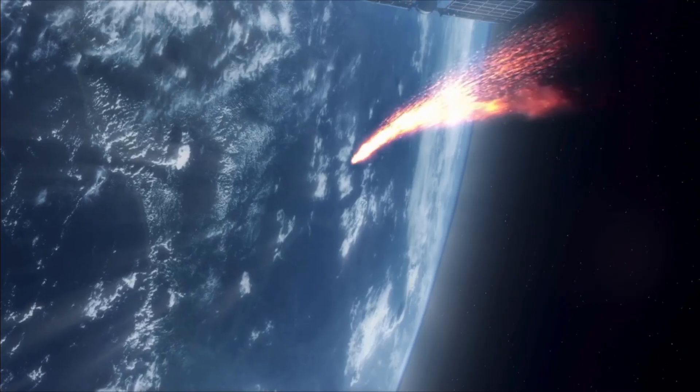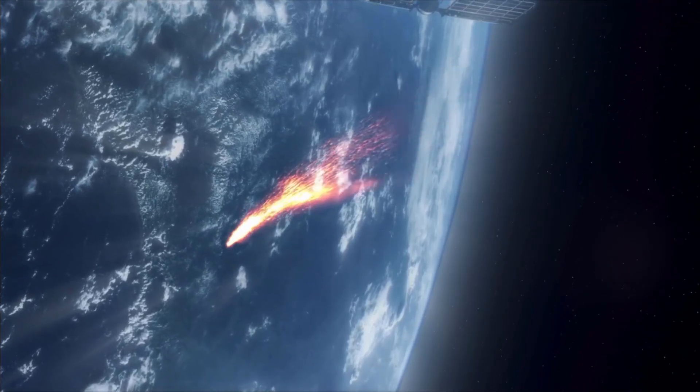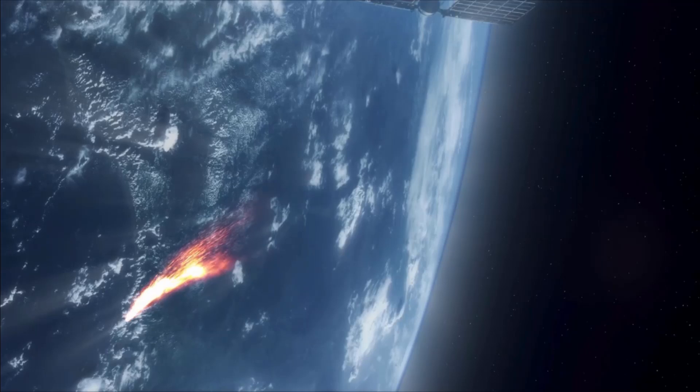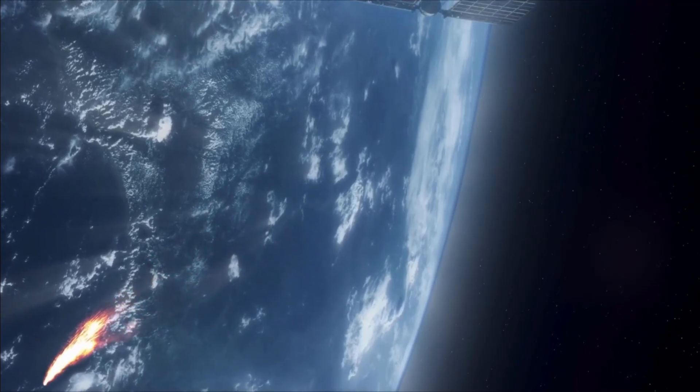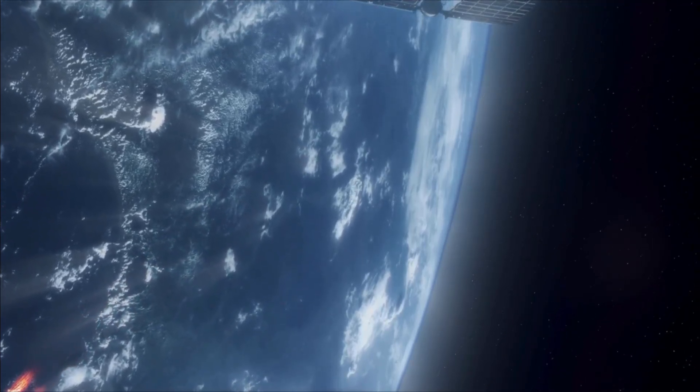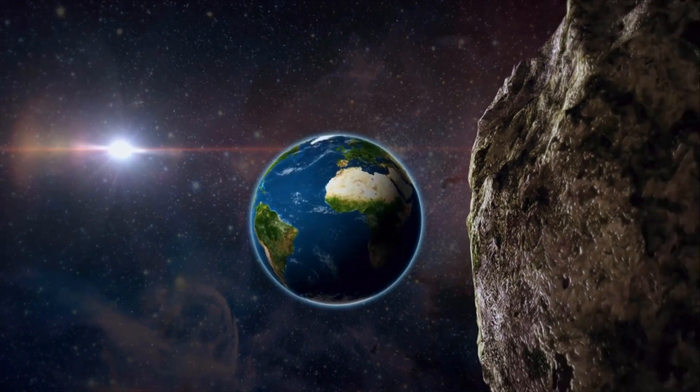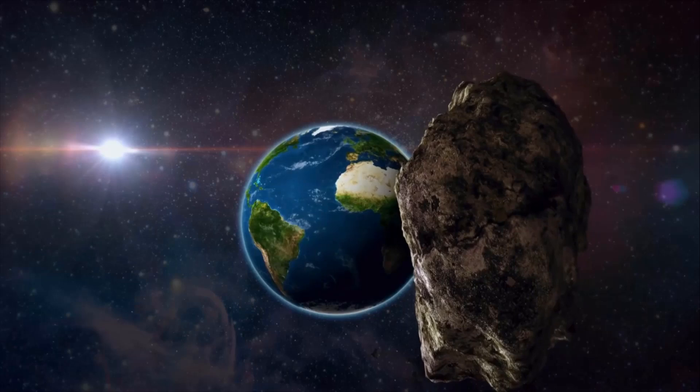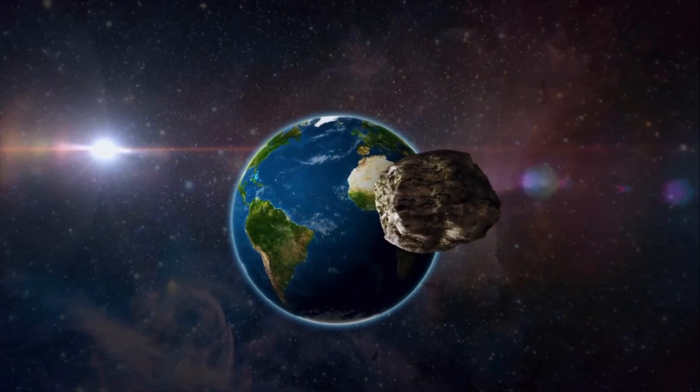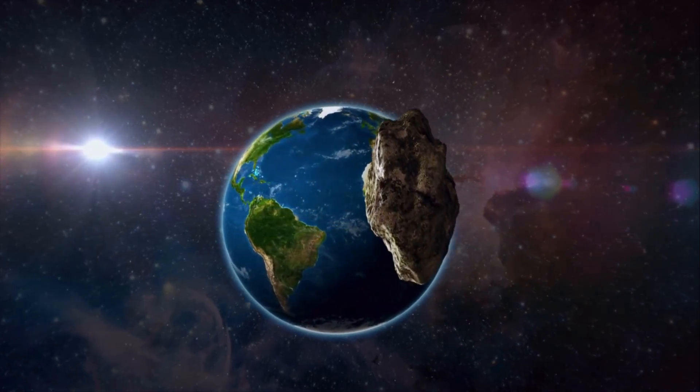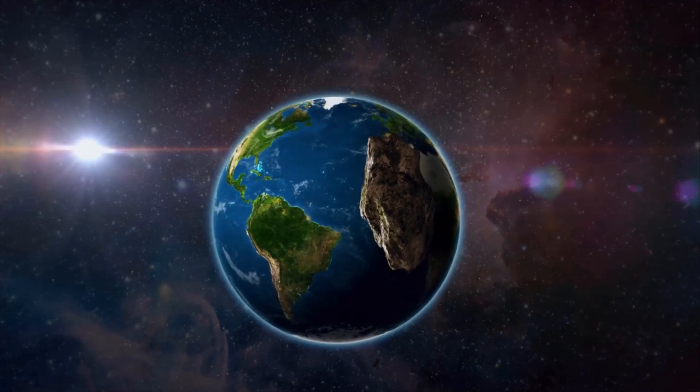If this asteroid were to impact our planet, the risk corridor spans a wide area, including the Eastern Pacific Ocean, the Northern and South Americas, the Atlantic Ocean, Central Africa, the Arabian Sea, and South Asia. The exact location cannot be determined just now until closer to the event.